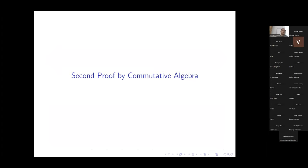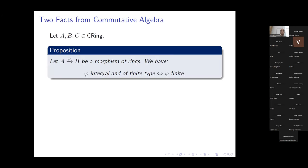Because this result lies between commutative algebra and representation theory, and we just saw a more representation-theoretic flavor of the first proof, I'm now going to give a second proof relying more on commutative algebra, also in a slightly more general form. We need two basic facts from commutative algebra. Forget about groups for now — we think about commutative rings A, B, C with unit.